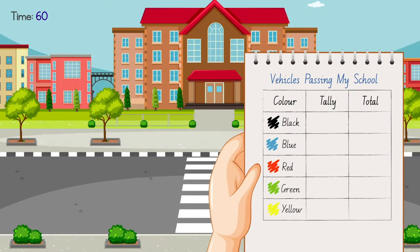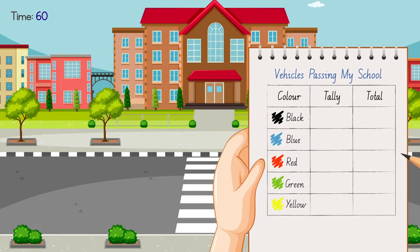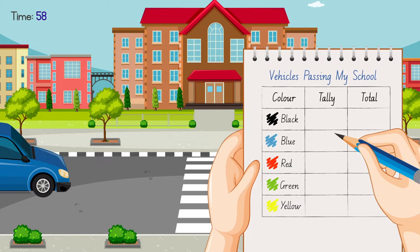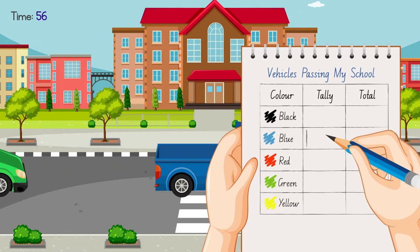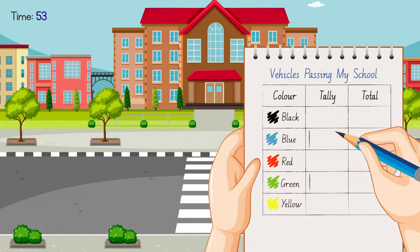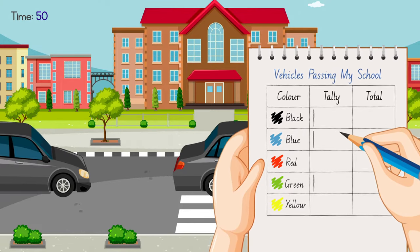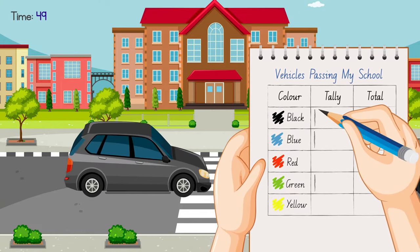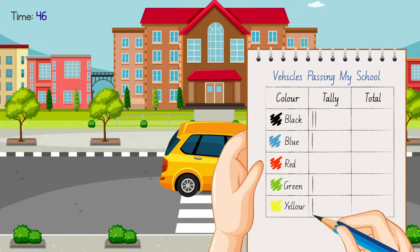Let's use a tally to record the colour of each vehicle that passes our school in one minute. There's a blue car. Look, there's a green car. There's a black car and another black car. There goes a yellow one.